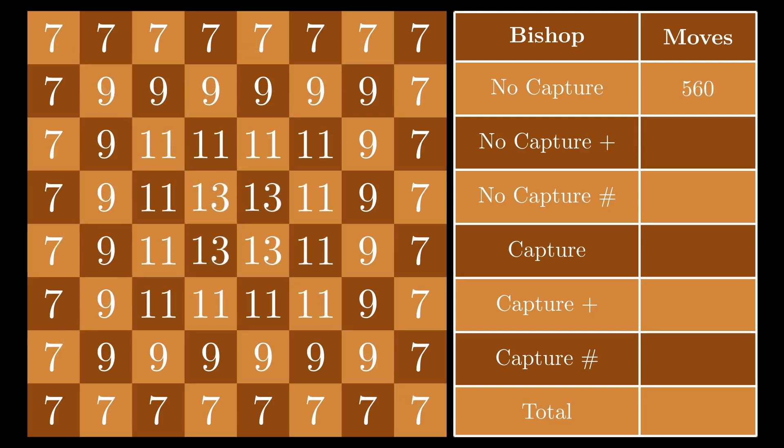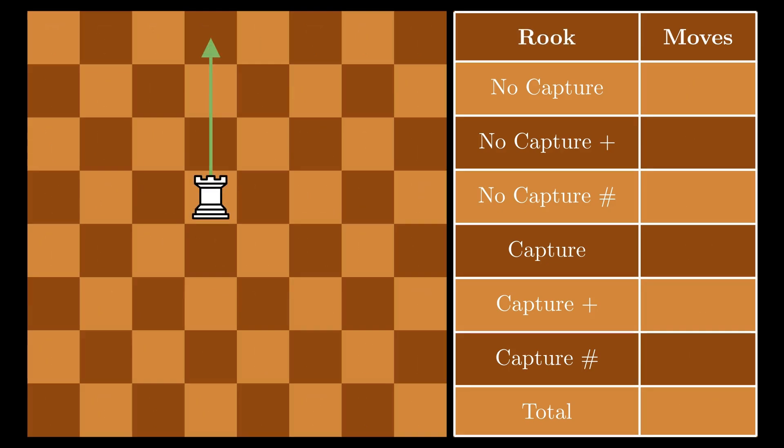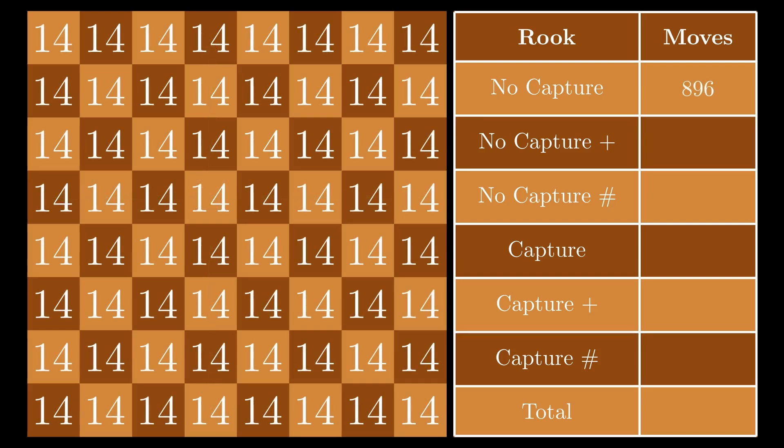In all, that's 560 moves for the bishop. This value applies for the other 5 situations, bringing the total potential moves to 3,360. Rooks are the simplest piece of all for this calculation, as no matter where the rook is placed, it always has the same number of moves, 14. That's 896 potential moves, and the grand total for the rook is 5,376.